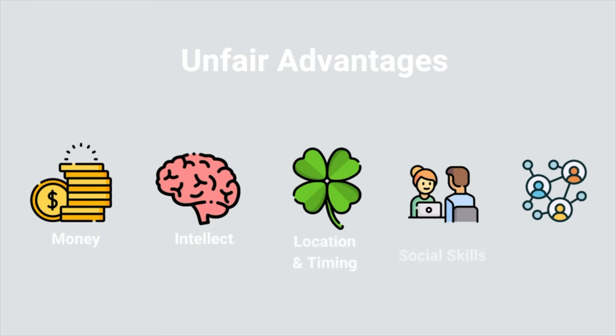An unfair advantage can range from your education to even a social or interpersonal skill. The book 'Unfair Advantage' talks about how you already have what it takes to succeed. Based on this book, there are five main categories of advantages: money, knowledge, location and timing, interpersonal skills, and social connections. Ali Abdaal, who is a really big YouTuber, did a review on this book — I would definitely recommend you check out that review, as there's a lot of insight on how you can identify your unfair advantages as strengths.